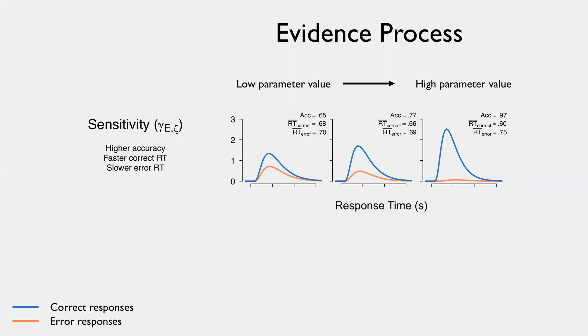And the blue and the orange correspond to correct and error responses. So as we go from low to high sensitivity, we get accuracy increases, the mean RT for correct responses becomes faster, and for errors becomes gradually slower, exactly what we expect from a sensitivity parameter change. I should note that this is when the sensitivity parameter changes and no other parameters of the model.